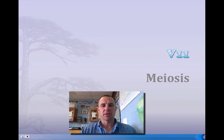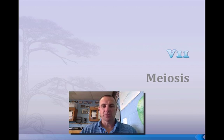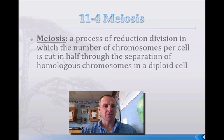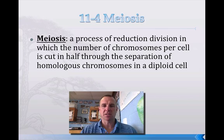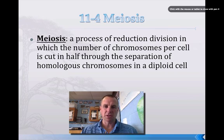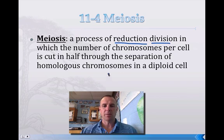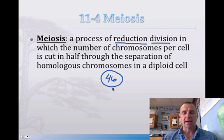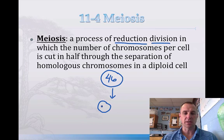Hey guys, we're back with video 11 dealing with meiosis. This is the last little section on this chapter, so hopefully you'll be able to get through it. When we talk about meiosis, the formal definition is: it's a process of reduction division in which the number of chromosomes per cell is cut in half through a separation of homologous chromosomes in diploid cells. Meiosis is reduction division — in our normal body cells in the human, we have 46 chromosomes, and if we reduce this number, we're going to end up with cells that have 23 in them.